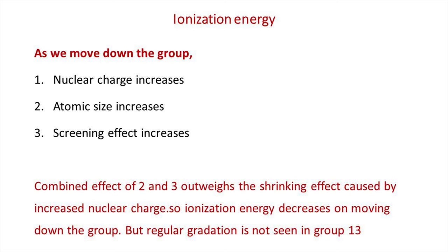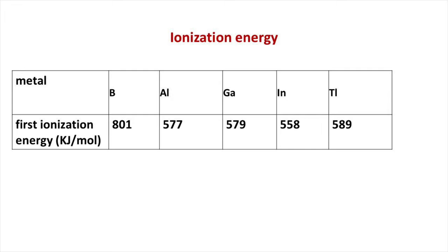Ionization energy decreases on moving down the group, but regular gradation is not seen in Group 13. The irregularities arise due to the imperfect shielding effect of d and f electrons, which is due to the diffuse shape and lower penetrating power of d and f orbitals. A sharp decrease in ionization energy from boron to aluminium is due to the appreciable increase in atomic size and screening effect of s and p electrons. However, the ionization energy of gallium is slightly higher than that of aluminium, due to the poor shielding effect of inner electrons and small atomic radius of gallium.